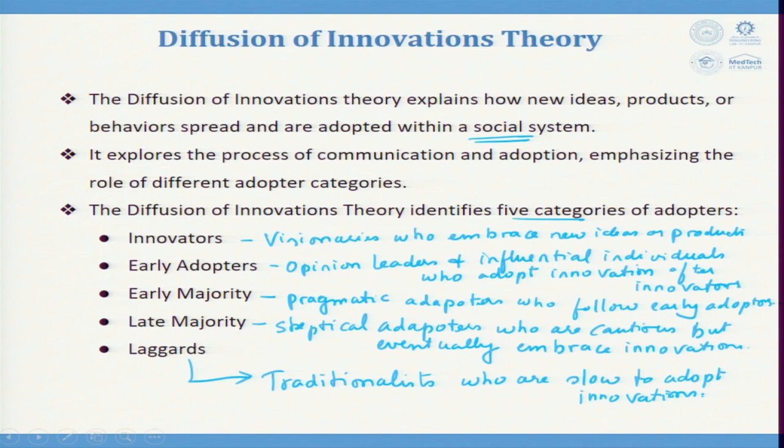The Diffusion of Innovations Theory identifies five categories. The innovator is a visionary who develops a solution first. Early adopters — opinion leaders or influential individuals such as a star, prime minister, headmaster, family head, societal head, or gram pradhan — adopt after the innovator. Early majority are pragmatic adopters who follow them, for example: 'The pradhan has done it, so I will also do it.'